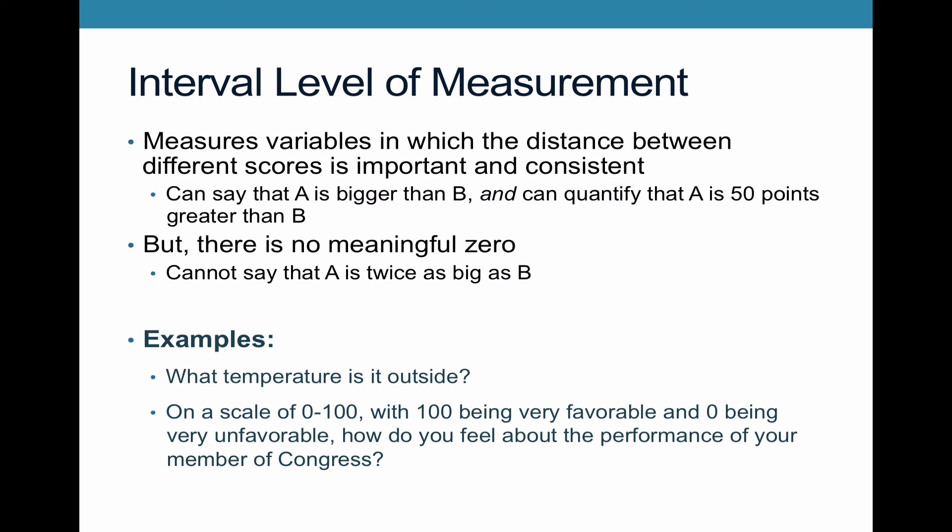Another example from political science would be a feeling thermometer on a scale of zero to 100, with 100 being very favorable and zero being very unfavorable — asking how you feel about the performance of your member of Congress. Those numbers are consistent and a distance of 10 means something, but zero doesn't usually mean no approval. It might mean active disapproval, so it's not really a meaningful zero — it doesn't mean you have none of favorability.